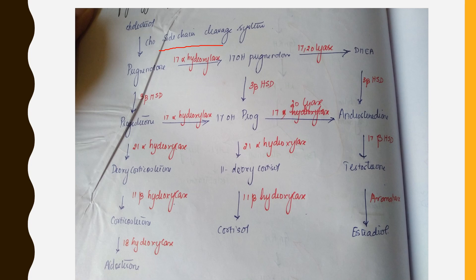Pregnenolone converts to progesterone, progesterone to deoxycorticosterone, deoxycorticosterone to corticosterone, and corticosterone to aldosterone. The function of aldosterone is sodium and water retention and potassium excretion. Next, pregnenolone can get converted to 17-hydroxypregnenolone, and 17-hydroxypregnenolone becomes 17-hydroxyprogesterone.